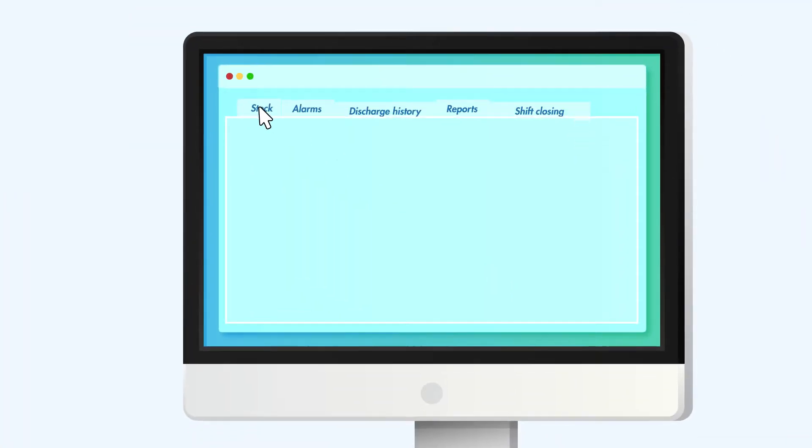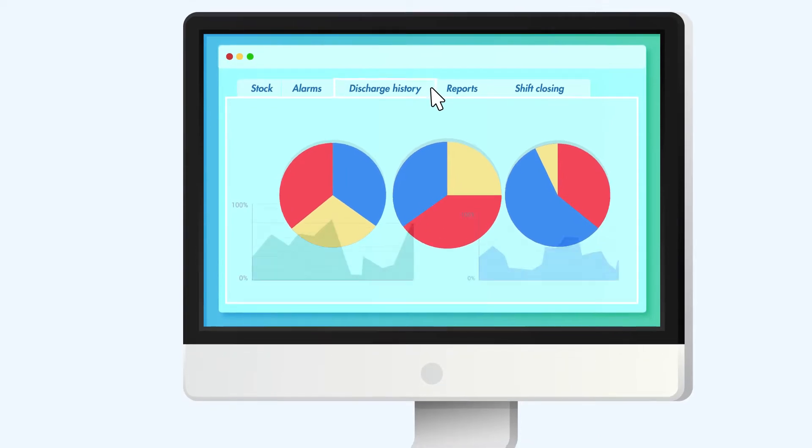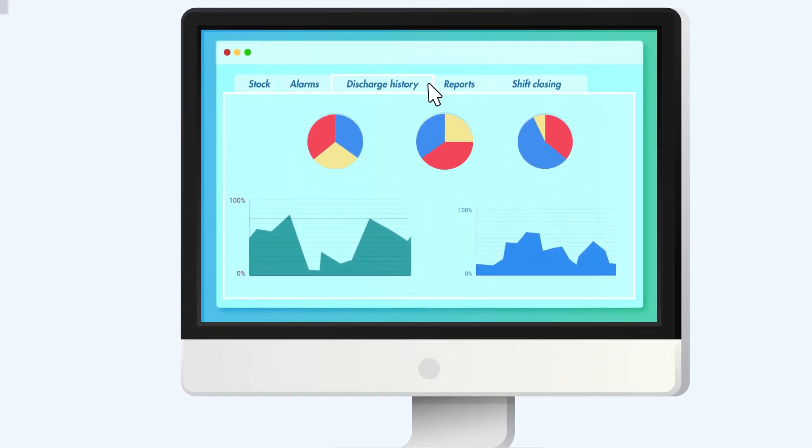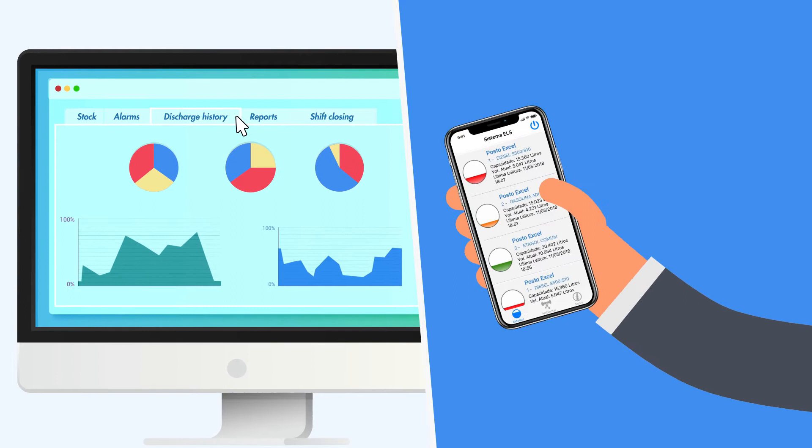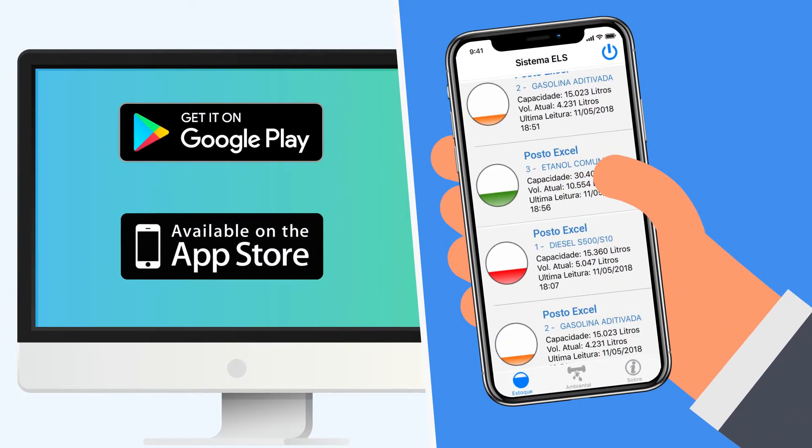You can track all the information through the CEV console screen, at our ELS system portal esl.xlbr.com.br, and on the ESL mobile app available for Android and iOS operational systems.